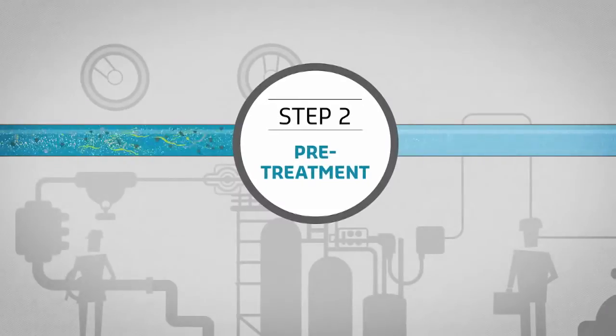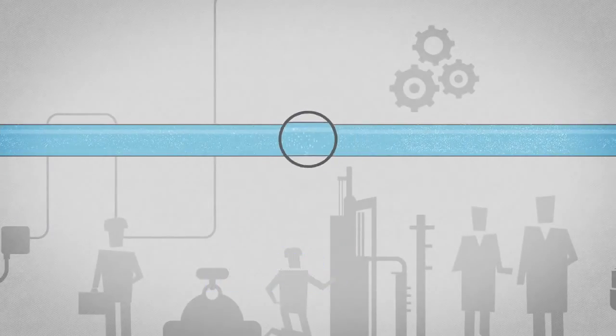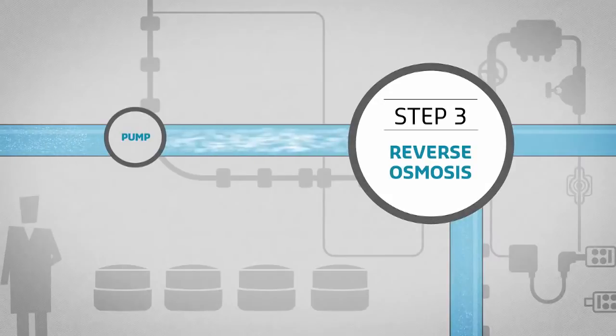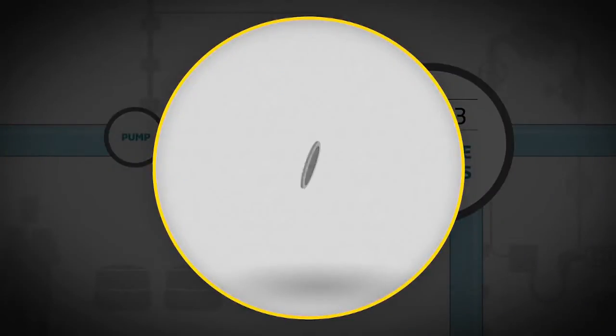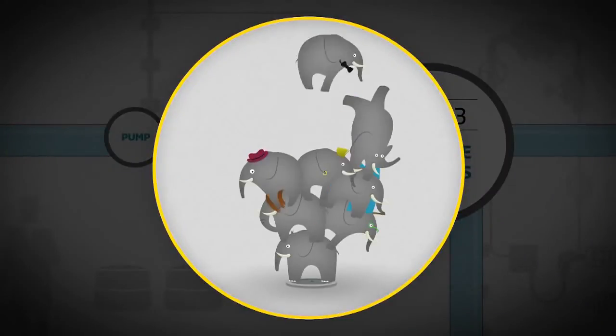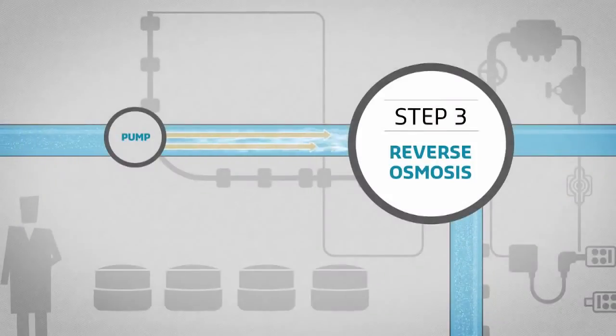After this stage, only molecules of water and salt remain. The salt water is then sent at a very high pressure through an extremely fine membrane. The pressure exerted on the water during this process is equivalent to 100 elephants standing on a manhole cover. This is called reverse osmosis.